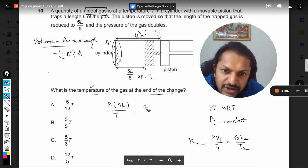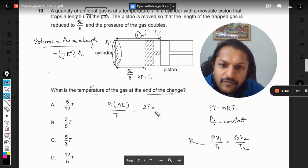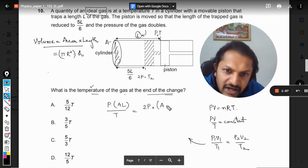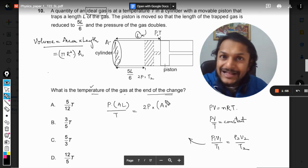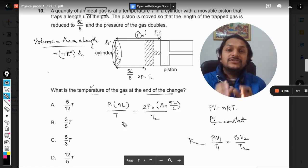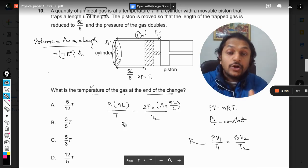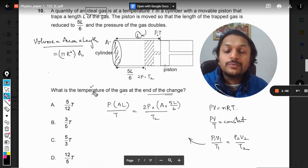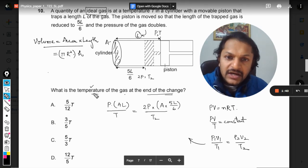So what was the initial volume? The product of A and L. So this is divided by capital T. Now the pressure has been doubled and volume will be area multiplied by the new length which is 5L by 6, so it will be 5L by 6 divided by the temperature now, and the temperature now is written as T2 which I do not know, and that is what we are supposed to find in the question.